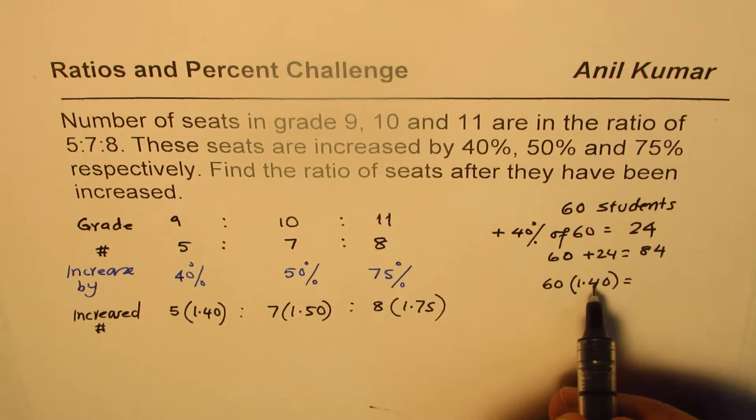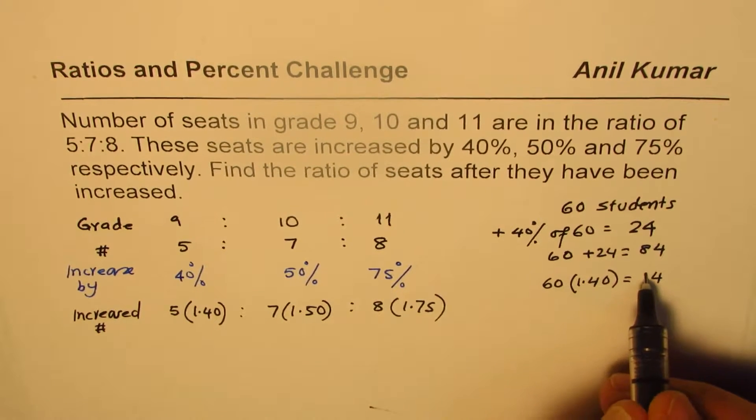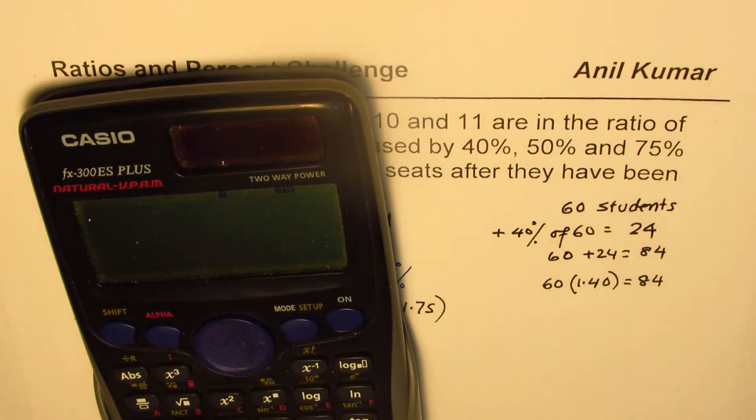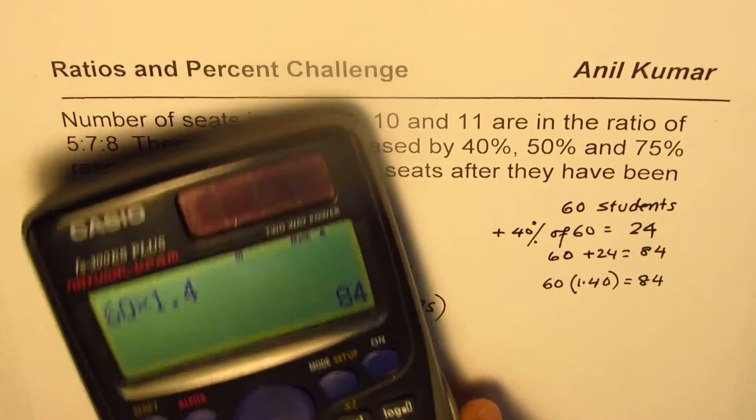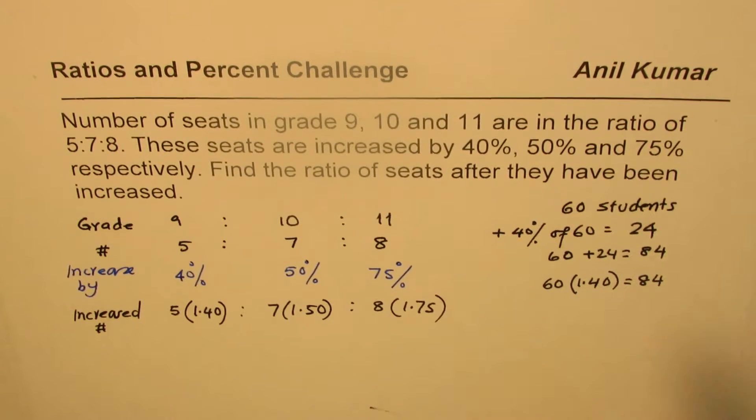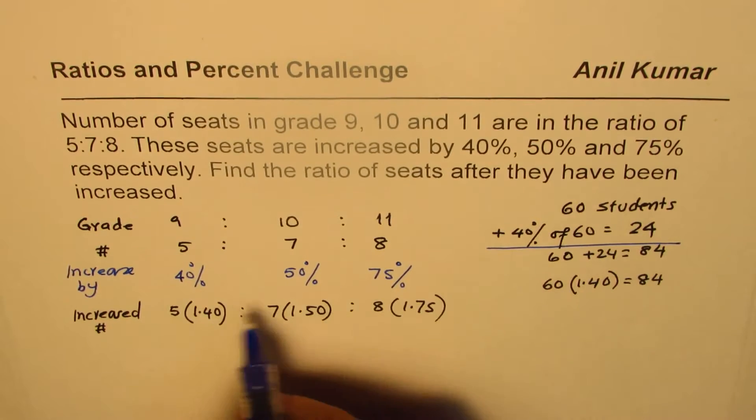So when you do 6 times 4 is 24 and 6 times 1 is 6, 6 plus 2 is 8. So you can always use calculator and verify these answers. So what is 60 times 1.4 equals to 84. You get exactly the same answer. So these are two methods to find increased numbers when you are increasing by a percent.